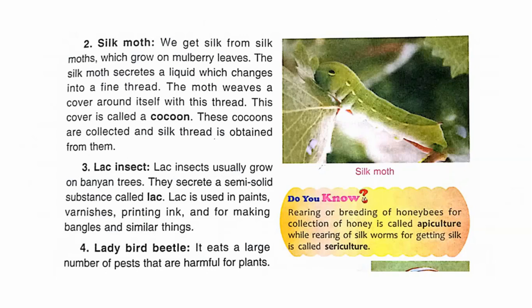The next useful insect is the lac insect, which usually grows on certain trees. Lac insects secrete a semi-solid substance called lac. Lac is used in paints, varnishes, printing ink, and for making bangles and similar things.